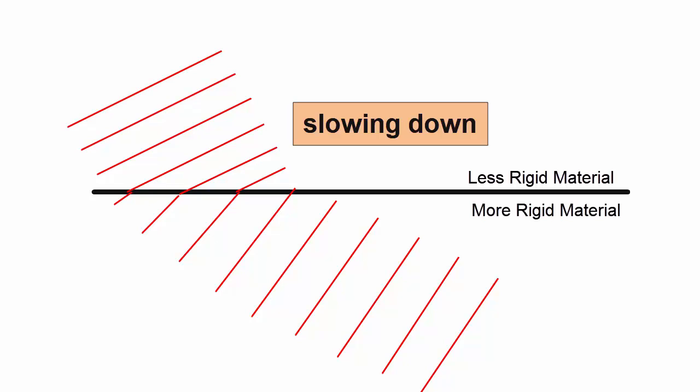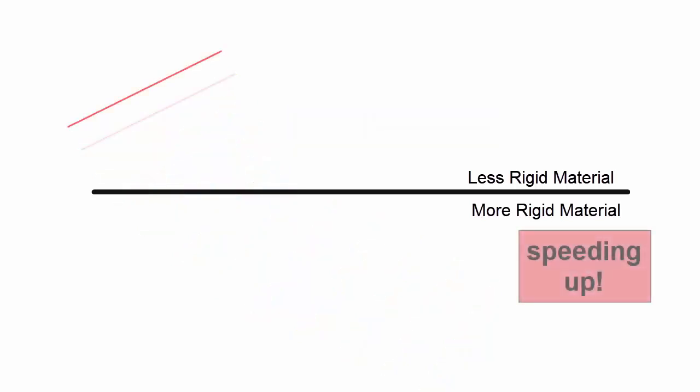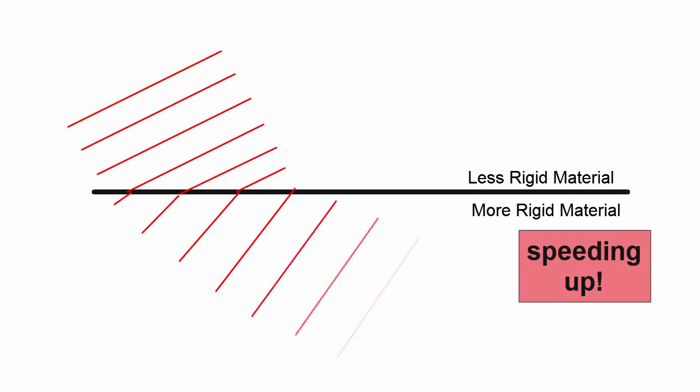If one side of the wave speeds up while the other is still going slower, the wave will bend upwards. If one side slows down while the other is still going faster, the wave will bend downwards.